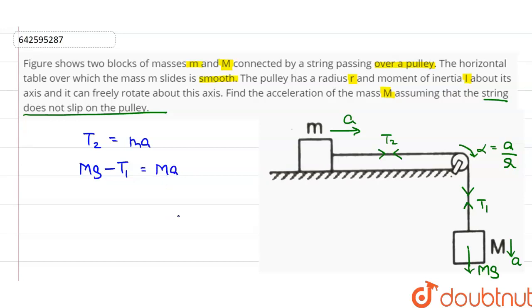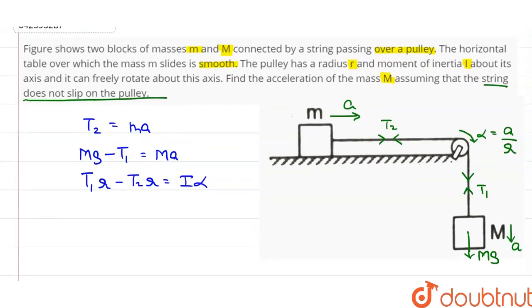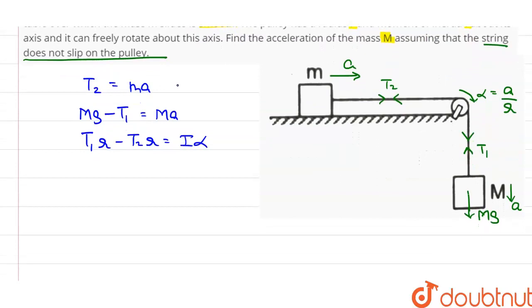And for the pulley we get T1 into R minus T2 into R is equal to I alpha. Let this be equation 1, let this be equation 2, and let this be equation 3.